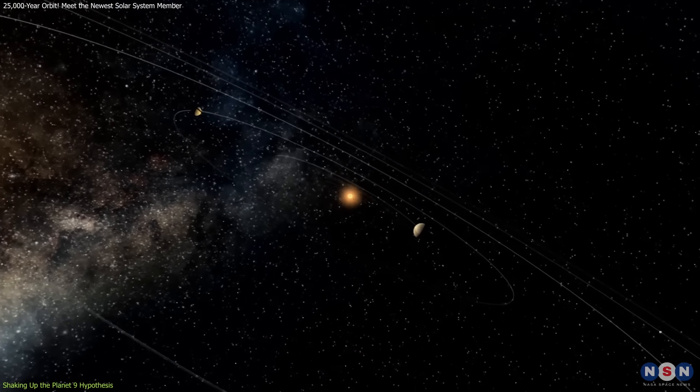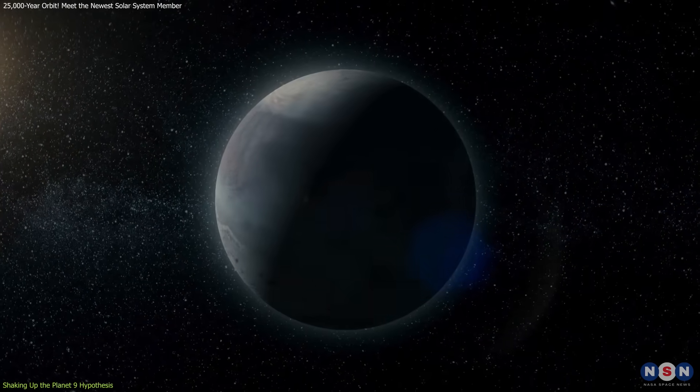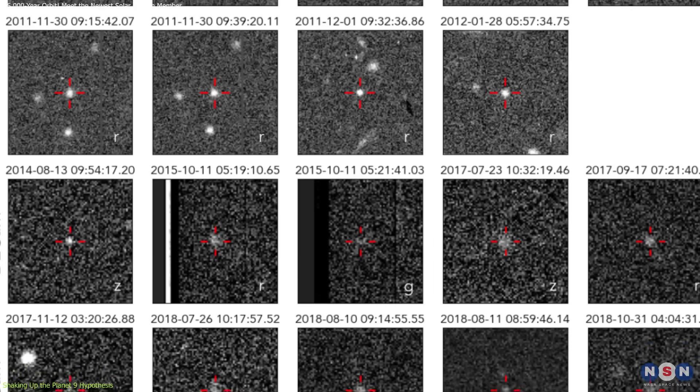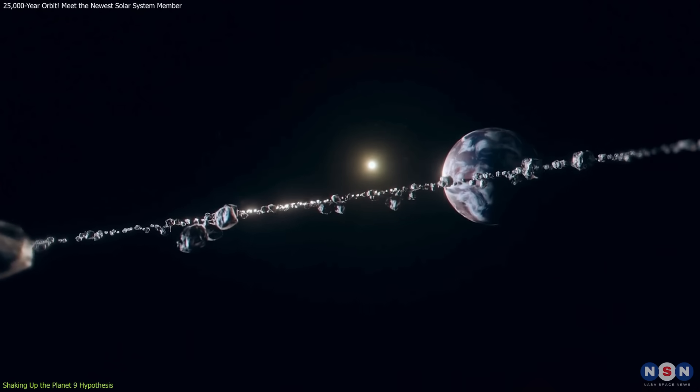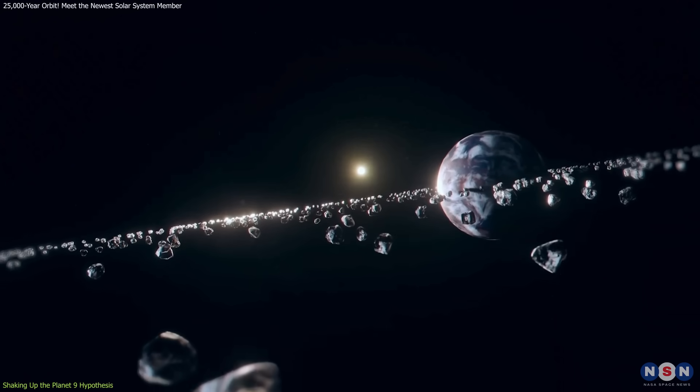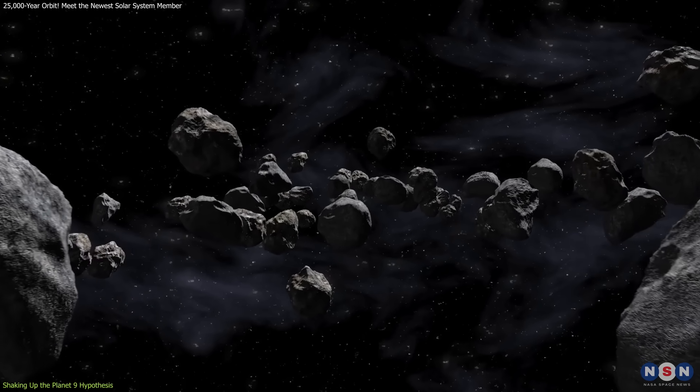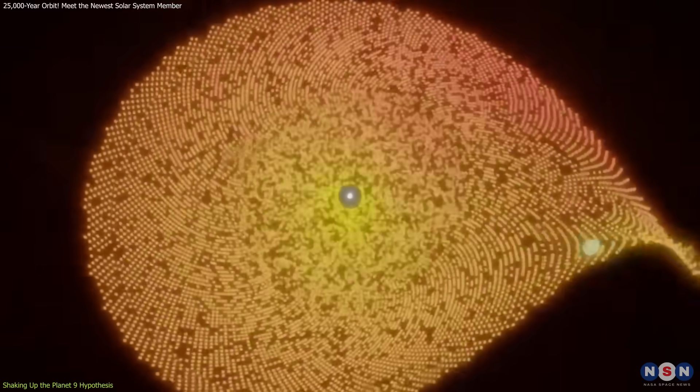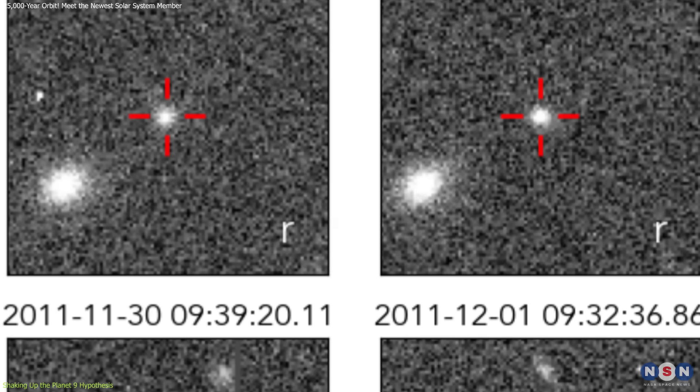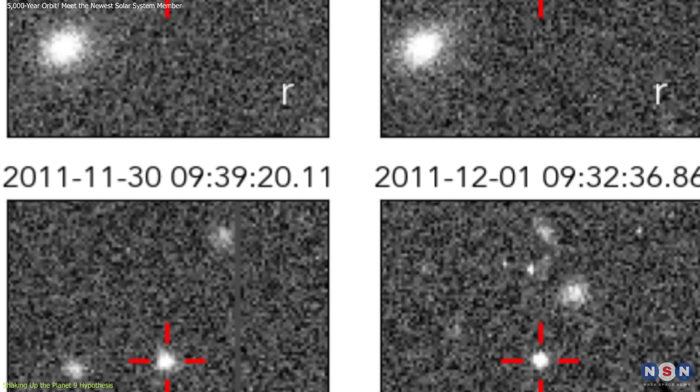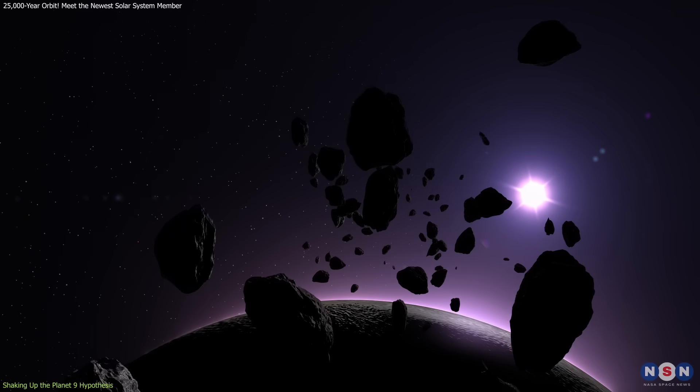Rather than undermining the search for Planet 9, though, this discovery highlights the need for more data. It's possible that the orbits of TNOs are shaped not by a single massive planet, but by the combined gravitational nudges of many smaller objects, or even by external forces such as stellar flybys or galactic tides. In either case, 2017 OF-201 adds a layer of nuance to a debate that is far from settled.